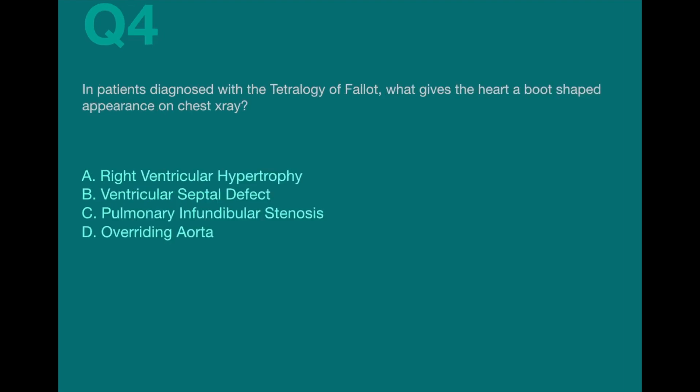Question 4. In patients diagnosed with the tetralogy of Fallot, what gives the heart a boot shaped appearance on chest x-ray? a. Right ventricular hypertrophy b. Ventricular septal defect c. Pulmonary and fundibular stenosis d. Overriding aorta